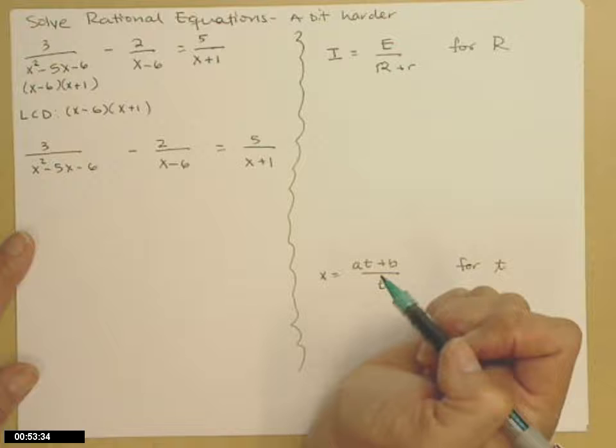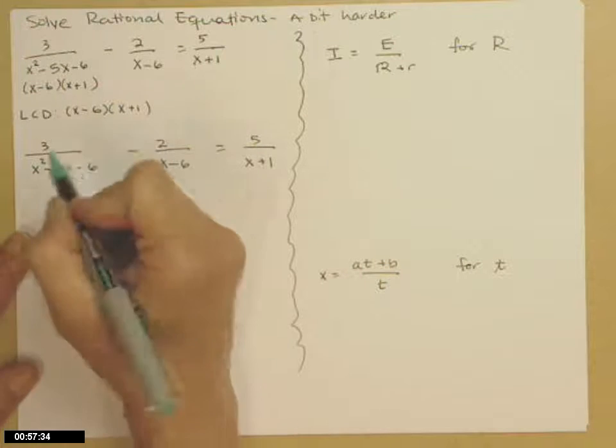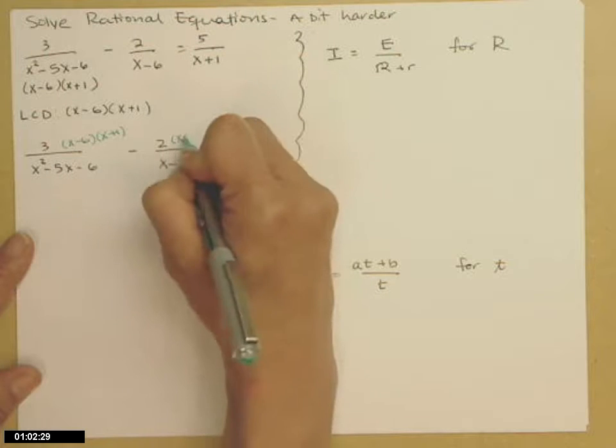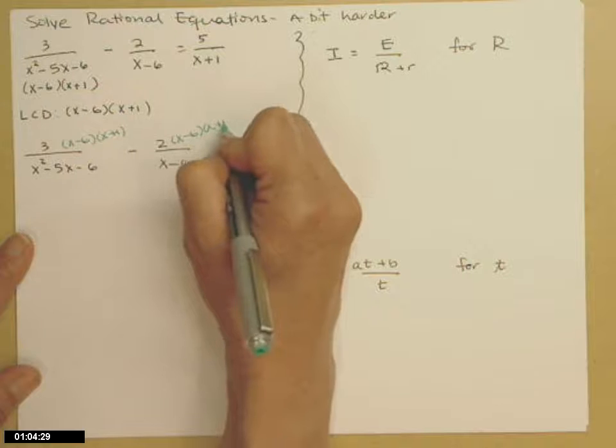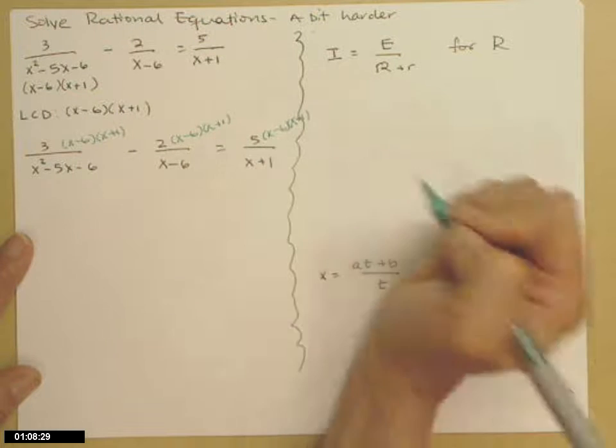If you remember from the last examples that I did, this LCD distributes on the left, so it's really the case that each term gets multiplied by the LCD. Each term in your equation, multiplication is a distributive property.